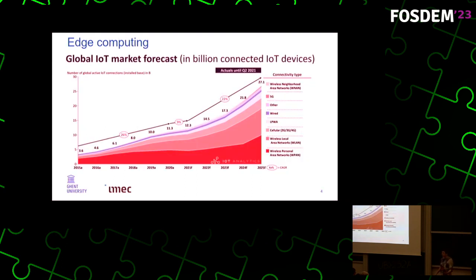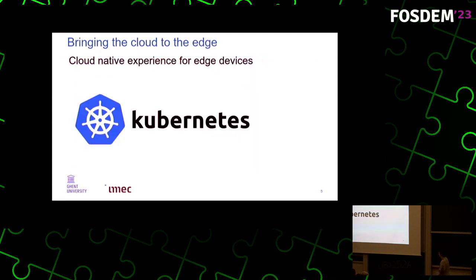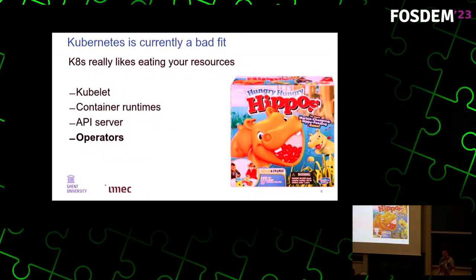Edge computing is becoming more and more popular. More and more people want to run their applications closer to end users, on devices inside of users' homes, for example. As a result, you have a lot of people coming from a background of developing cloud applications who now want to develop applications that run on very low-powered devices. They really like the development experience of the cloud — all the tools, the cloud-native experience with tools like Kubernetes. But as most of you might know, Kubernetes isn't really a great fit for the edge.